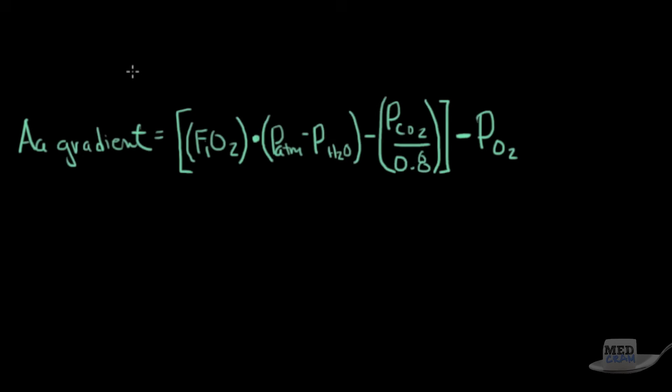Here's an equation for the AA gradient and this has some of the items in it that we saw before. This part up here refers to the capital A. That's the amount of oxygen in the alveolus. This here is the smaller case A. This is the amount of oxygen that is dissolved in the blood. This is the PaO2 that you pick up on a blood gas. So let's plug in some numbers for somebody who's normal.